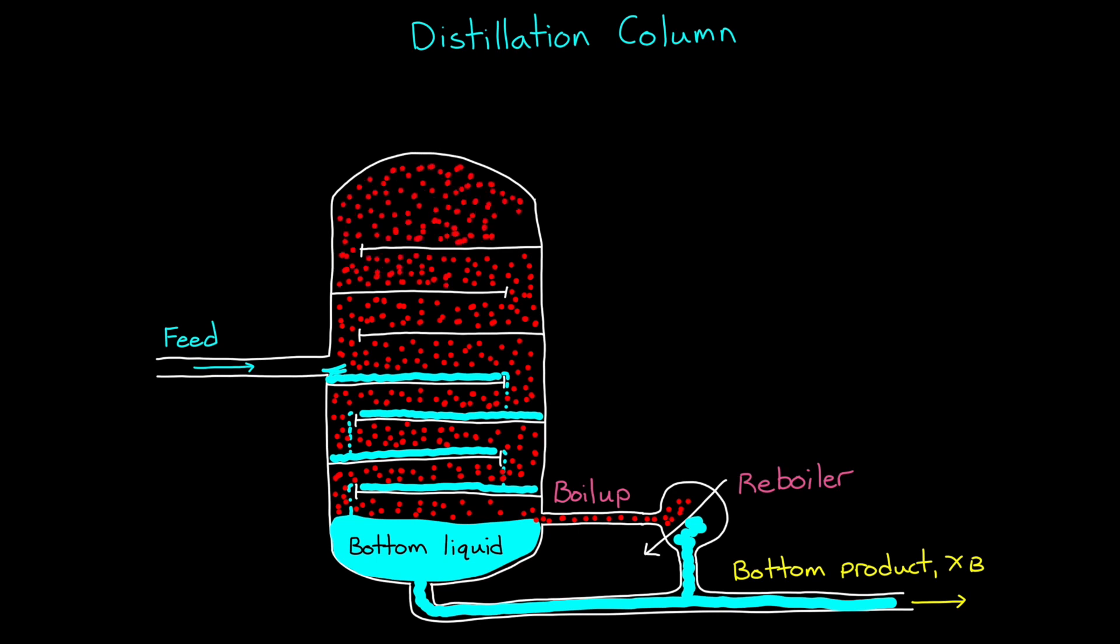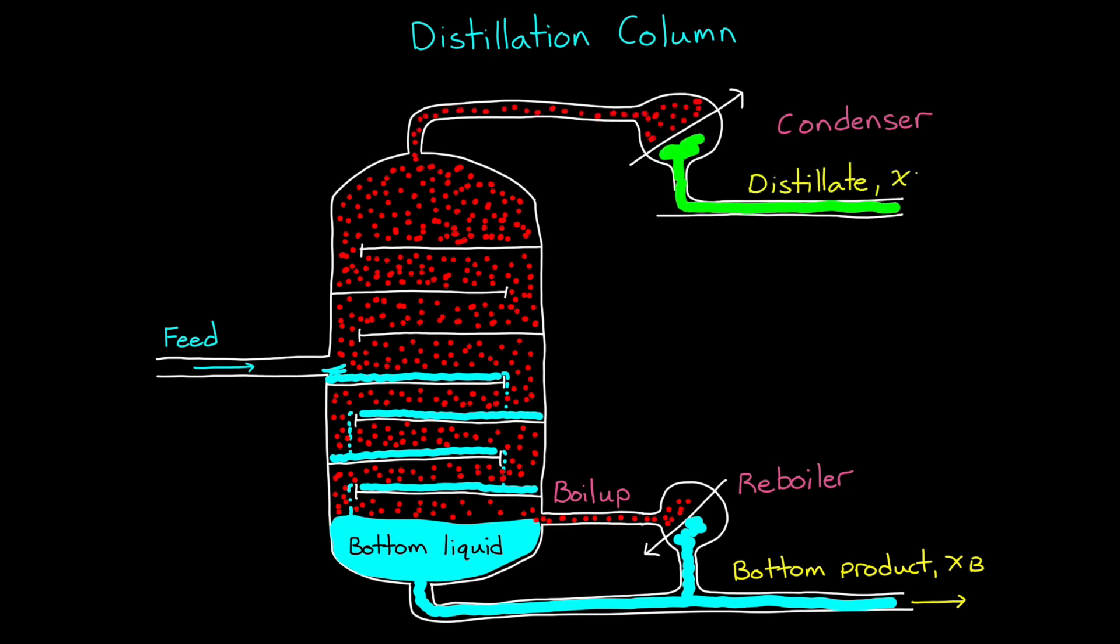Now, the vapor moves to the top and then is pulled away and sent into a condenser to turn it back into a liquid. And part of this liquid is sent away as the distillate, and the rest is sent back into the column as reflux. Now, when this is operating at steady state, we want this system to accept a continuous feed and to return a distillate that has some purity level, like it's composed of 99% of the component we're trying to distill out of the feed.